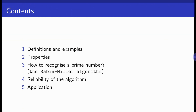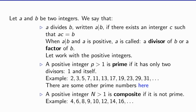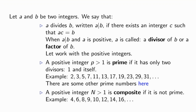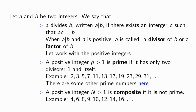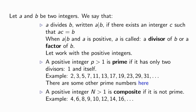Let's start with the definition of prime numbers. A prime number is a positive number different from zero and different from one, such that the only divisors of that number are one and itself. In this slide you have the definition of what is meant by 'A divides B', factor, and divisor. Some examples of prime numbers: 2, 3, 5, 7, 11, 13, 17, 19, 23, and so on and so forth.